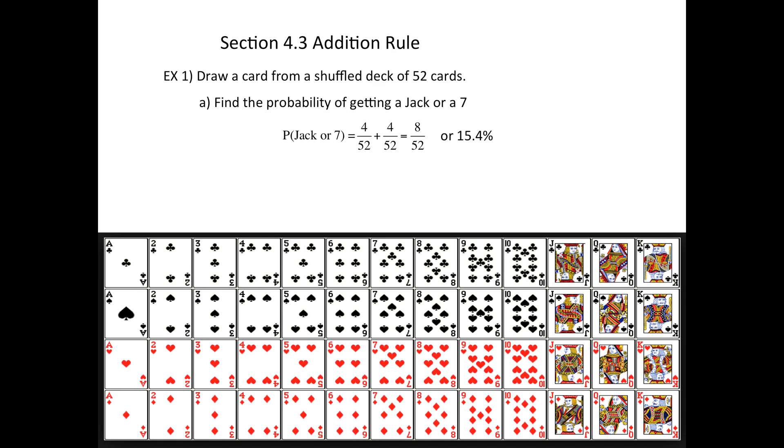This section basically has two main examples. Here's one where the two things are distinct: a card could be a jack or it could be a seven, but there is no such thing as the jack of sevens. So in that case, you just add the two fractions together and you're done.